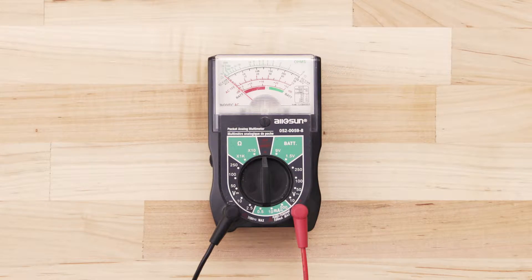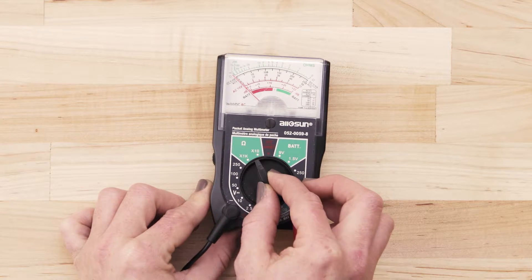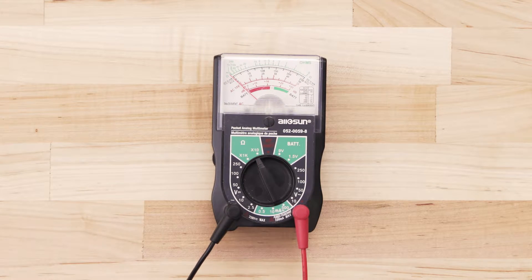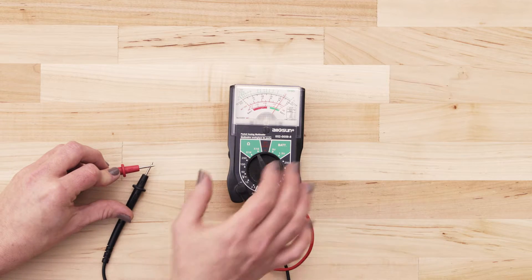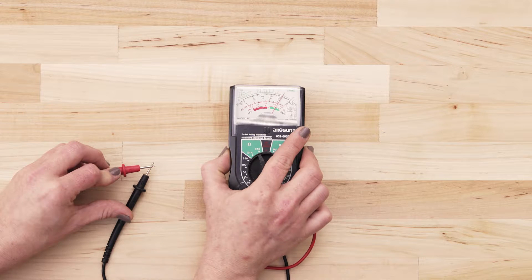If you use an analog multimeter, set the multimeter to the lowest ohms of resistance. Next, touch the probes together and adjust the needle until it's calibrated at zero.